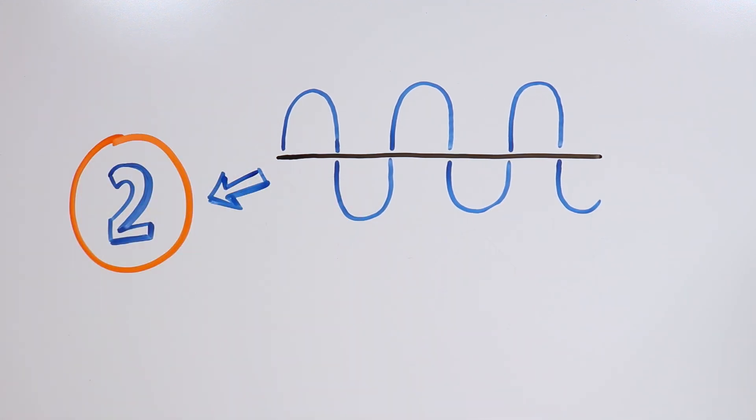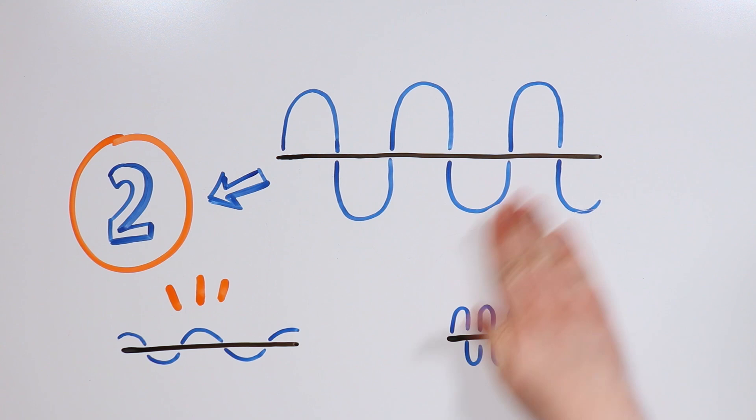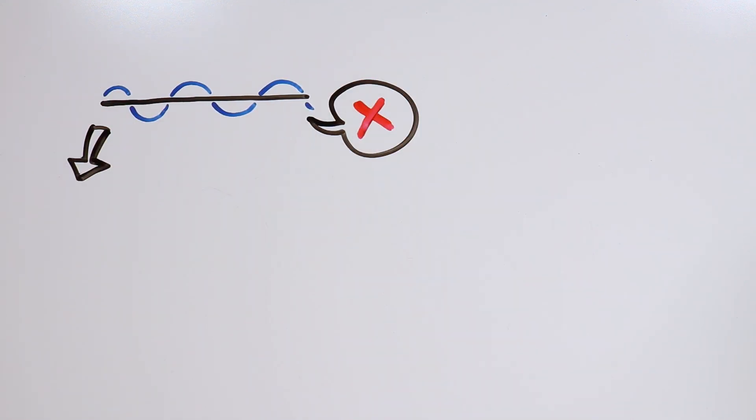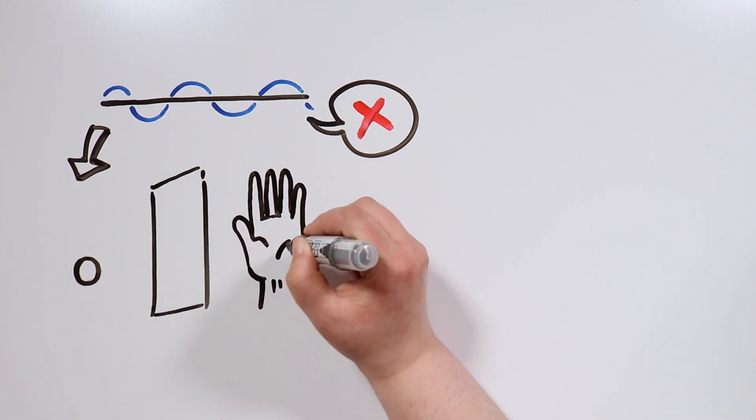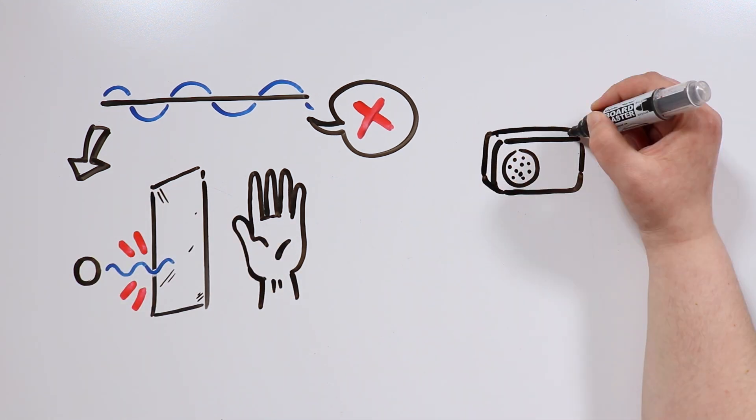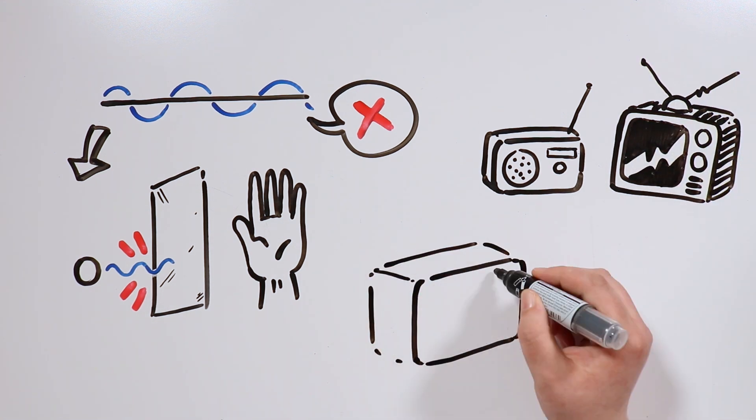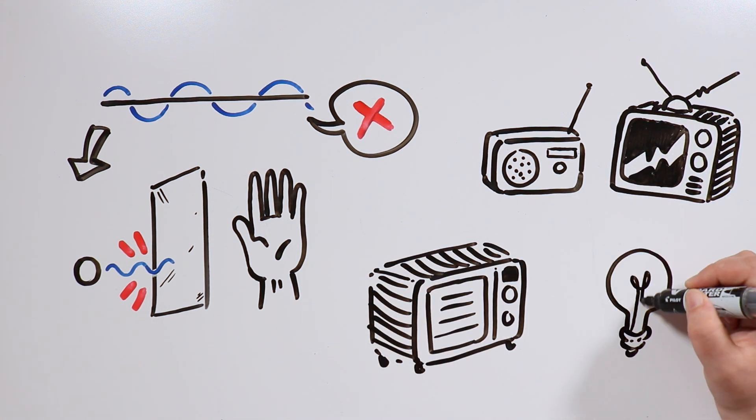Electromagnetic waves can be classified in two groups – non-ionizing radiation and ionizing radiation. Non-ionizing radiation doesn't have enough energy to break the bonds holding together the atoms located in the medium it is irradiating. Examples of this kind of radiation are radio and television waves, microwaves, and visible light.